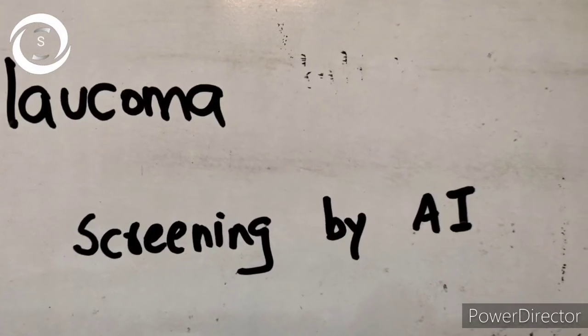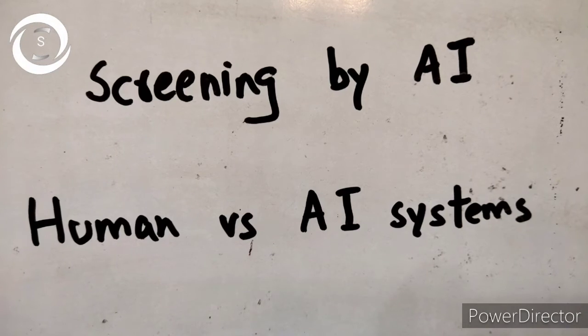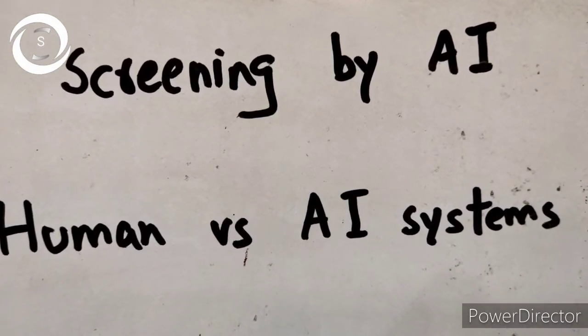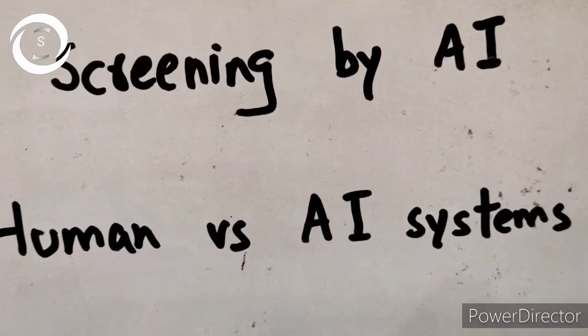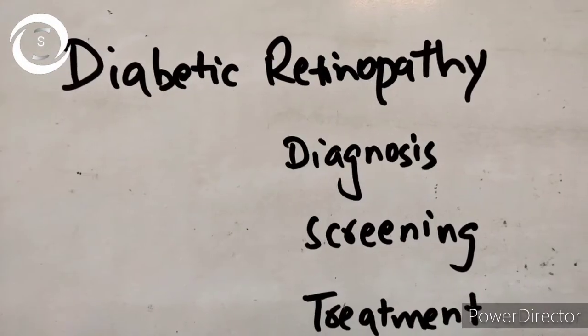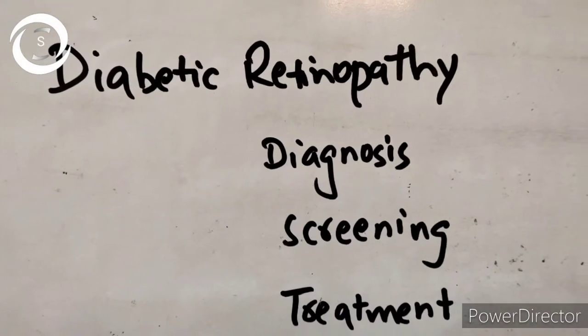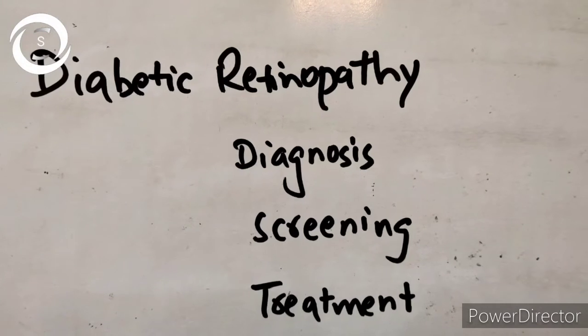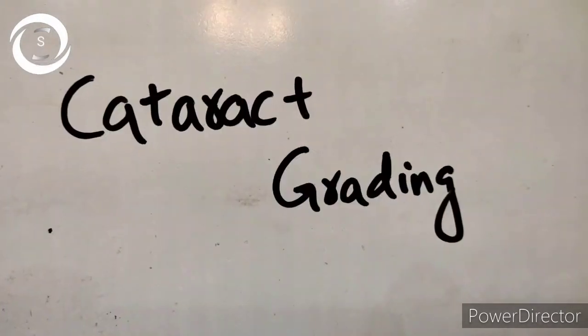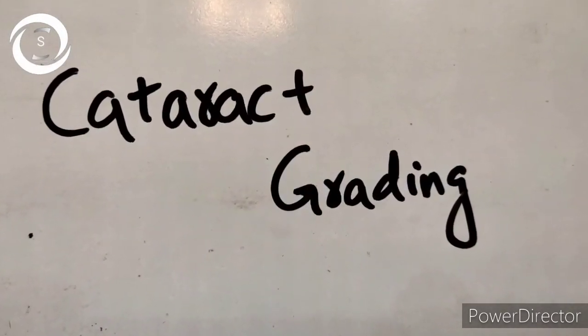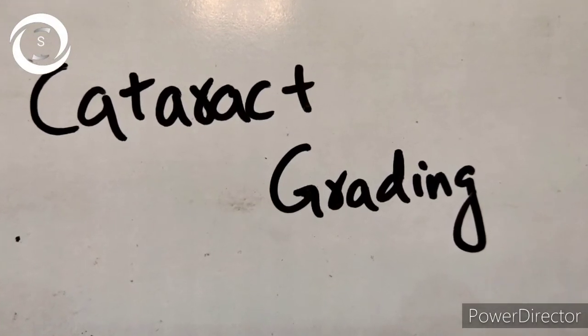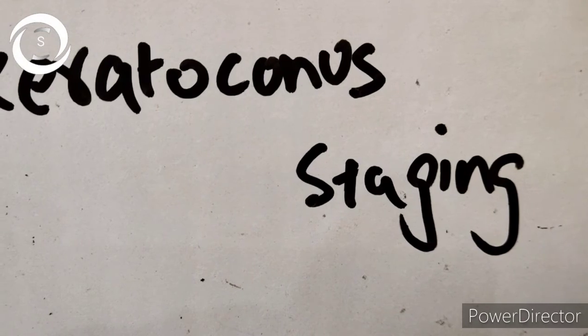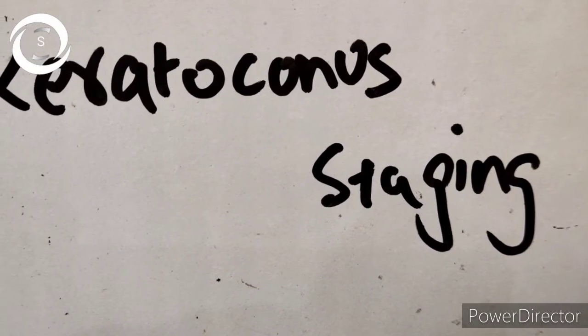AI is also used for diabetic retinopathy screening, diagnosis, and management. It is also used in the grading of cataract and grading of keratoconus by Scheimpflug technology, and in the near future for other ophthalmic diseases as well.